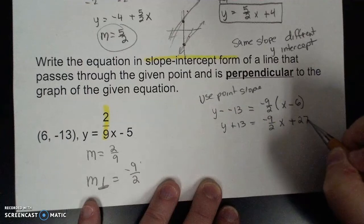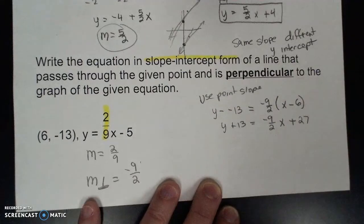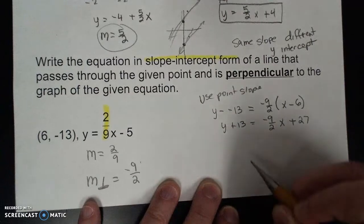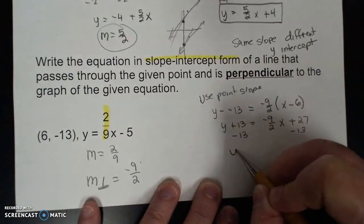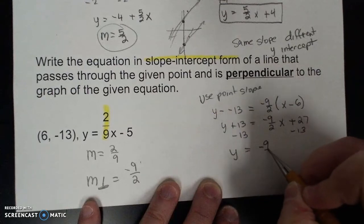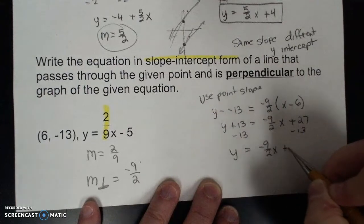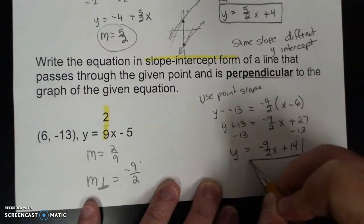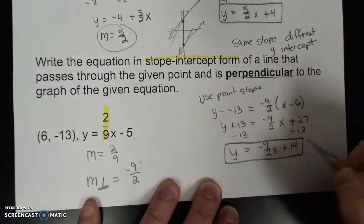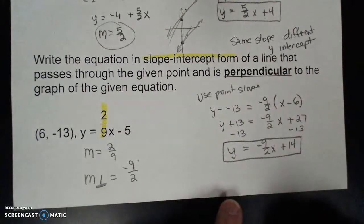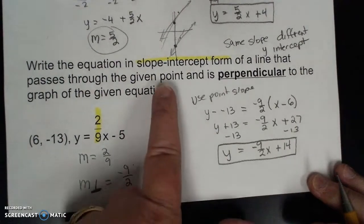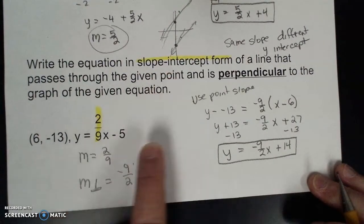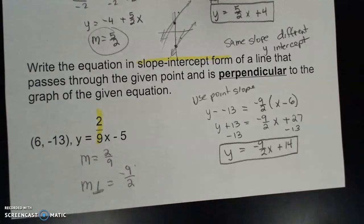Simplifying: y plus 13 equals negative 9 halves x plus 27. Subtract 13 from both sides: y equals negative 9 halves x plus 14. This is the equation of a line in slope-intercept form that is perpendicular to the given equation.